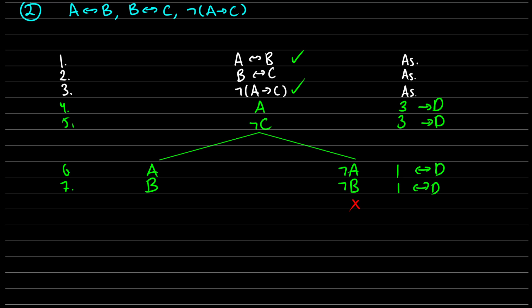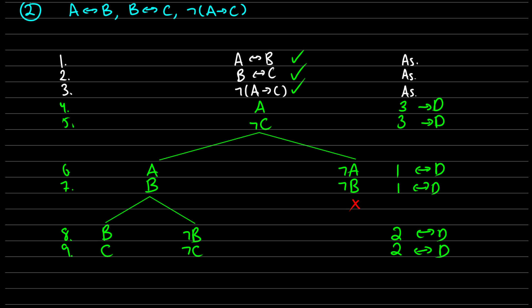Now we deal with B if and only if C — line two. This branches again into two possibilities: B and C are both true, or not B and not C are both true. That's lines eight and nine, justified as coming from line two via biconditional decomposition. All complex well-formed formulas are now taken care of. On the left branch we have C and not C — that closes. On the right branch we have not B and B — a contradiction there too. So both branches close.